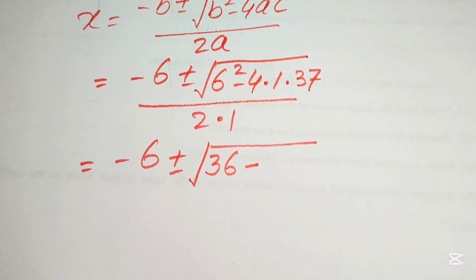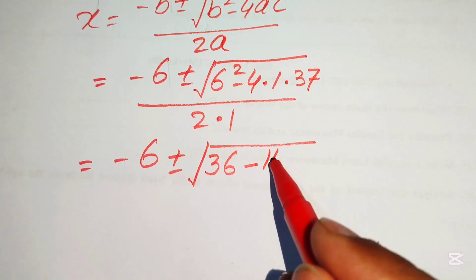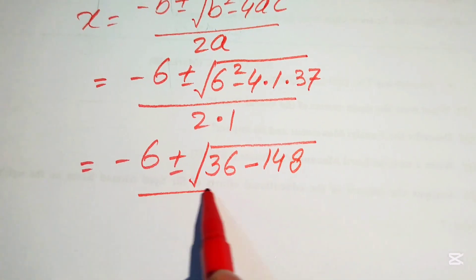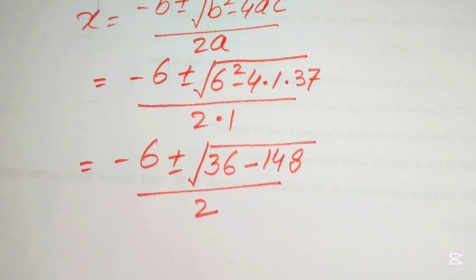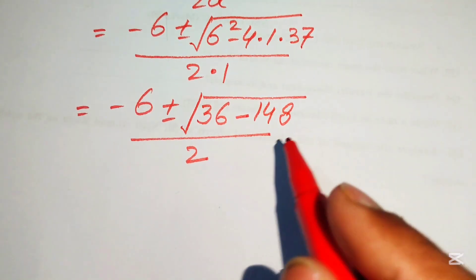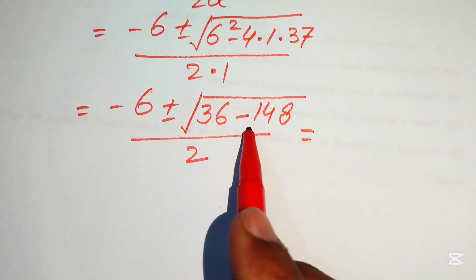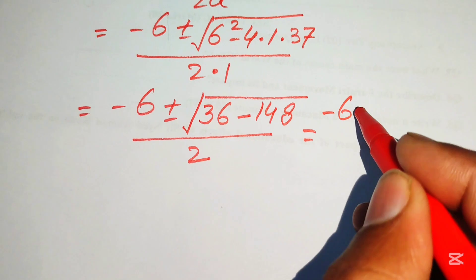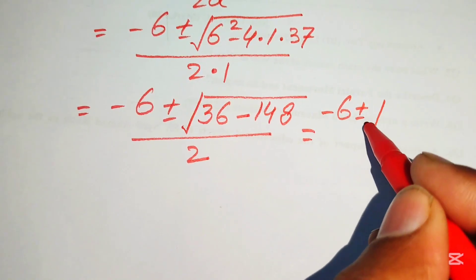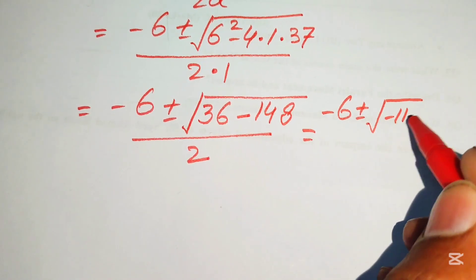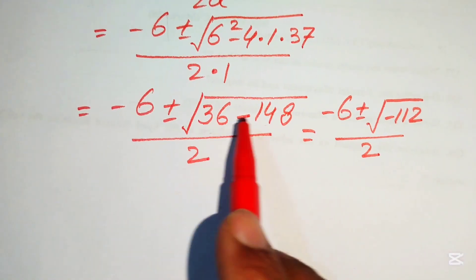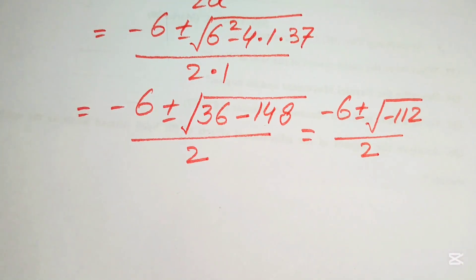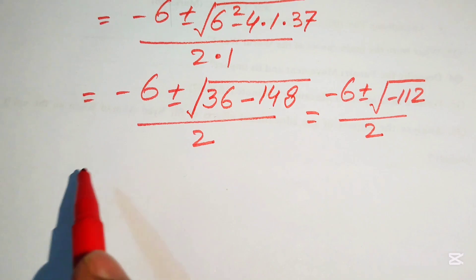Subtracting inside the radical: 36 minus 148 gives minus 112. So we have minus 6 plus or minus the square root of minus 112, divided by 2.